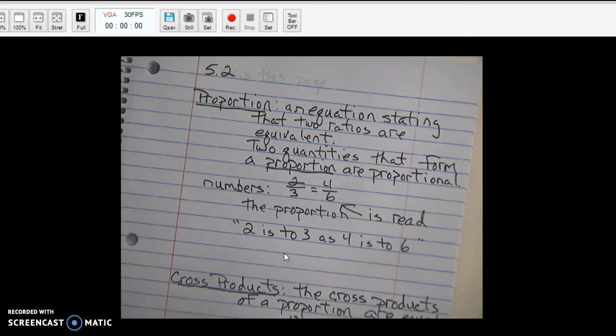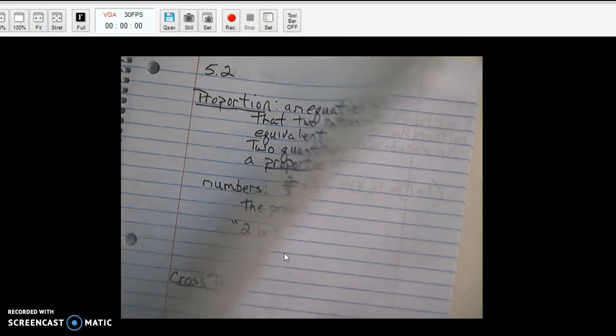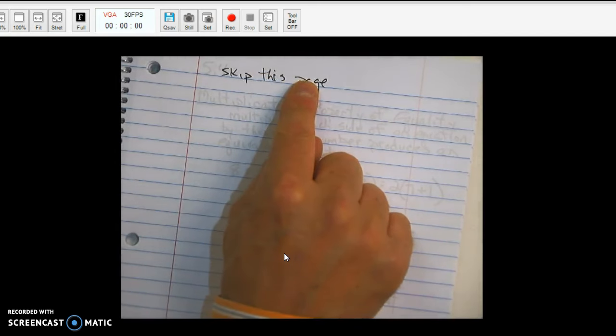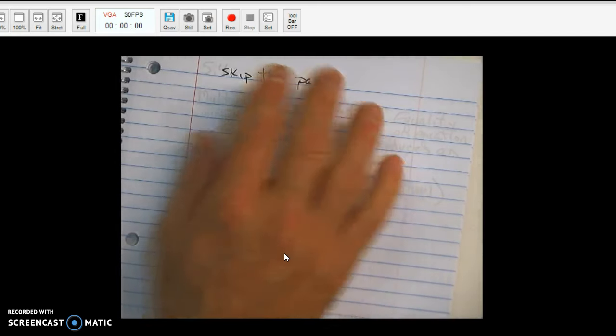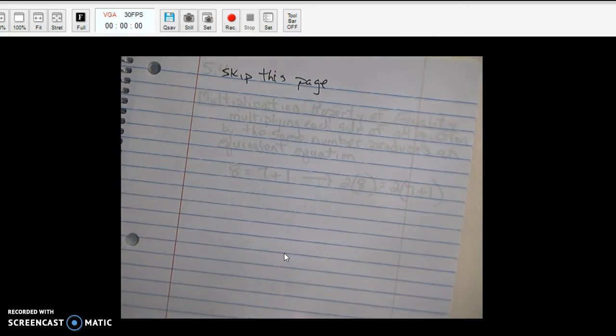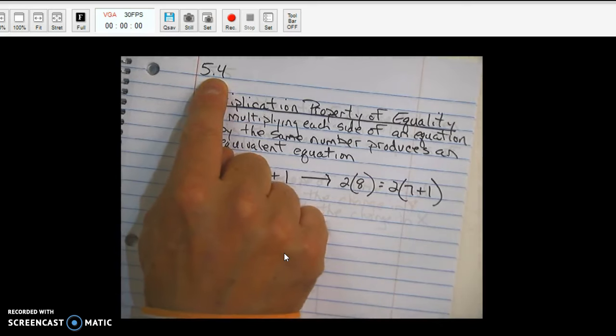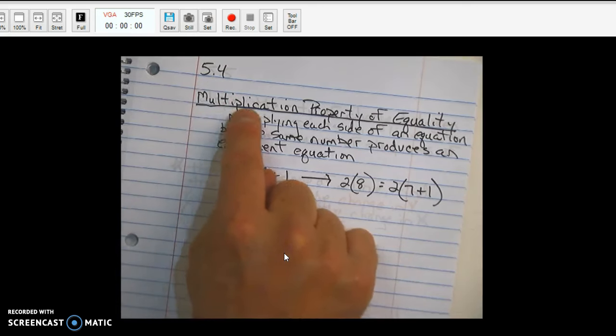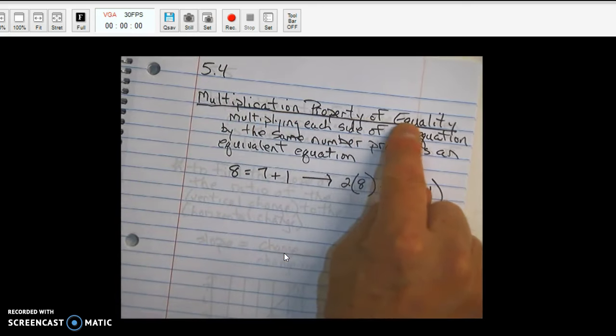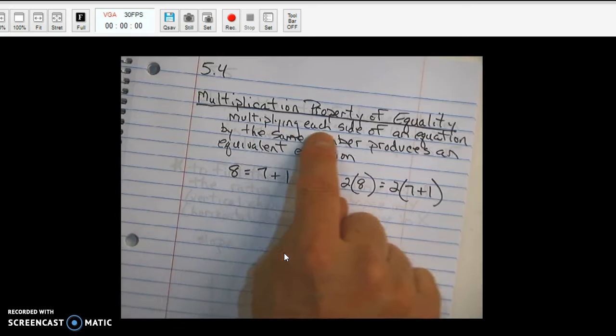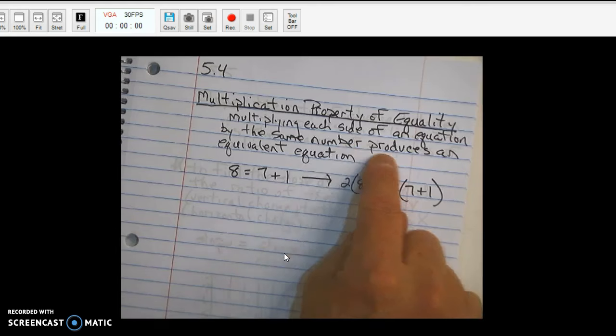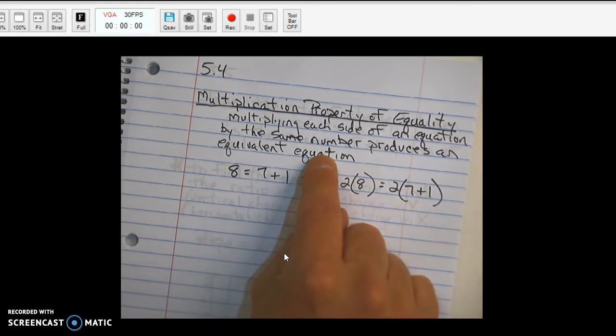All right. We're going to the next page. Which we're going to skip a page. I'll explain why later. So, our next heading is 5.4. This is something we have seen before. It's the multiplication property of equality. We saw this back in chapter 2 or 3, I think.